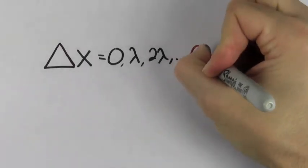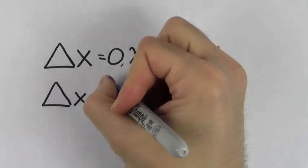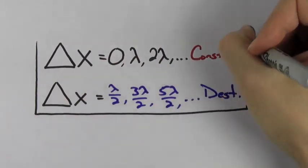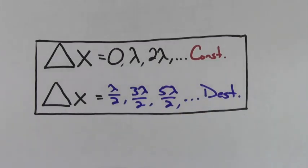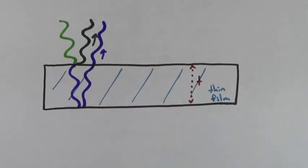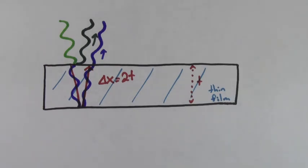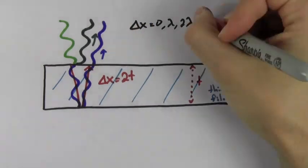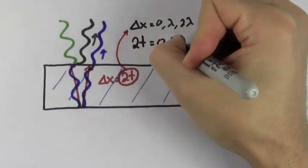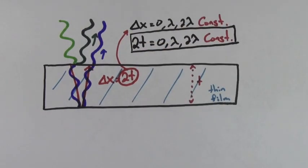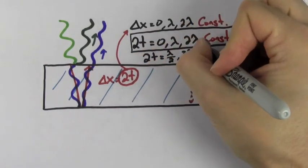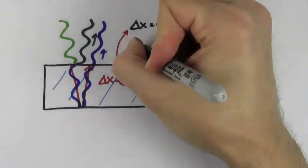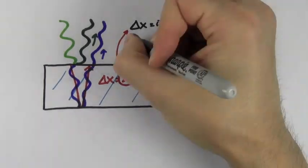We can determine whether interference is constructive or destructive because path length differences equal to a whole number of wavelengths are constructive, and path length differences equal to a half-integer number of wavelengths are destructive. Since the wave that traveled through the thin film traveled an extra distance of 2t, the path length difference for thin film interference is always 2t. So the condition for constructive interference becomes 2t = nλ (whole number of wavelengths), and for destructive interference, 2t = (n + ½)λ (half-integer wavelengths).